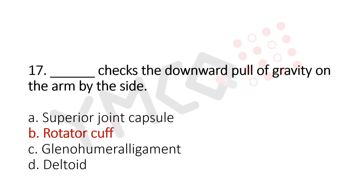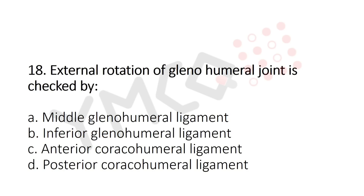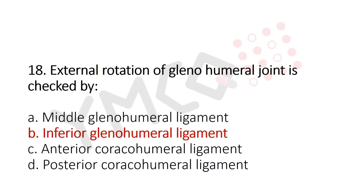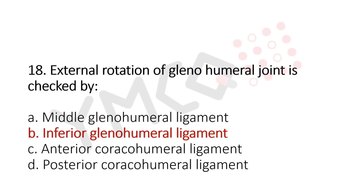Question 18: External rotation of the glenohumeral joint is checked by — option A: middle glenohumeral ligament; option B: inferior glenohumeral ligament; option C: anterior coracohumeral ligament; option D: posterior coracohumeral ligament. The answer is option B: inferior glenohumeral ligament.